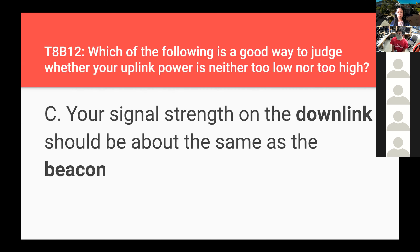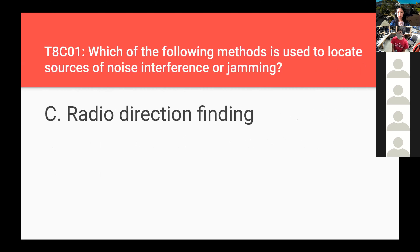Which of the following is a good way to judge whether your uplink power is neither too low nor too high? Your signal strength on the downlink should be about the same as the beacon. Which of the following methods is used to locate sources of radio interference or jamming? Radio direction finding.